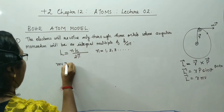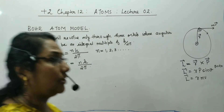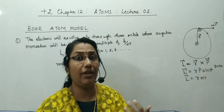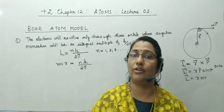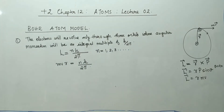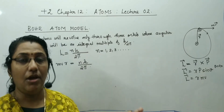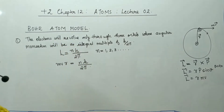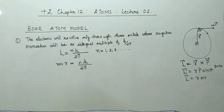We can write mvR = nh/2π. The electrons will revolve only through those orbits whose angular momentum is an integral multiple of h by 2π. Who said that the electrons are revolving around the nucleus? Surely it is Rutherford. He suggested that the centripetal force for the revolving electron is provided by the electrostatic force of attraction between them. But the electrons will revolve only through those orbits whose angular momentum is an integral multiple of h by 2π. L = nh/2π, mvR = nh/2π.